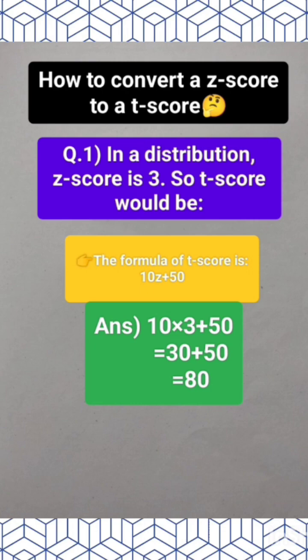When we put the value of the z-score in this formula, we get 80, and 80 is the right answer. I hope this is helpful for you.